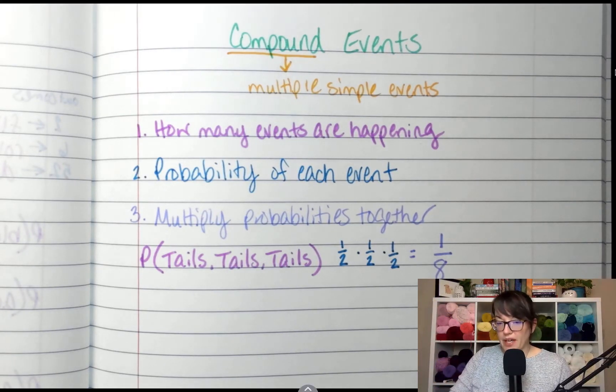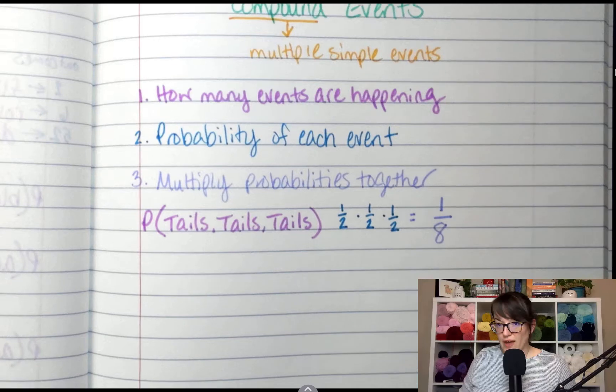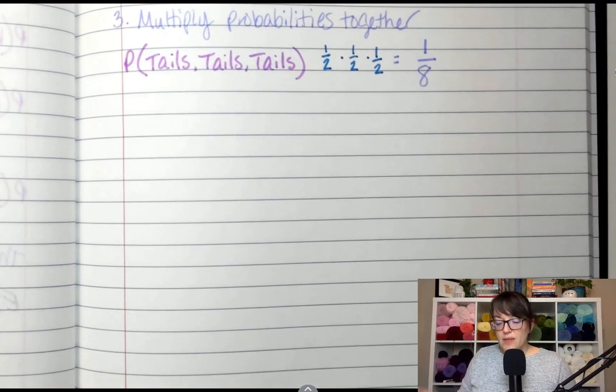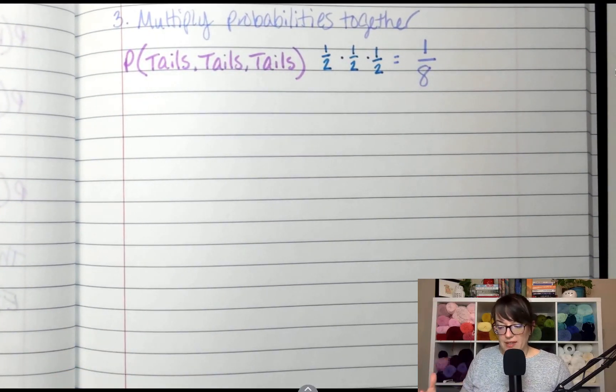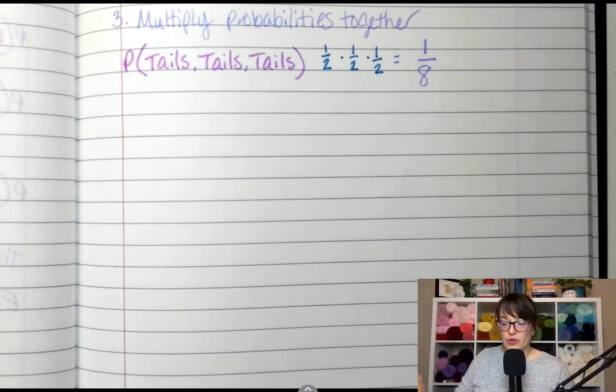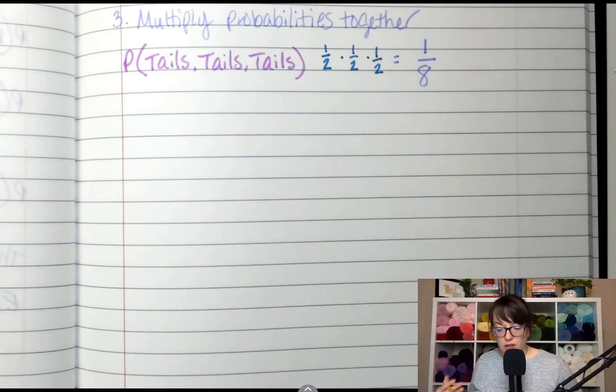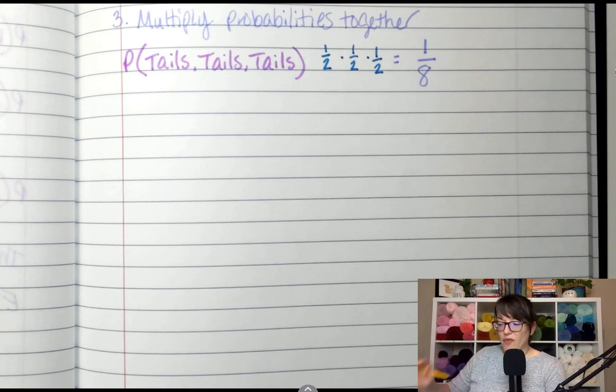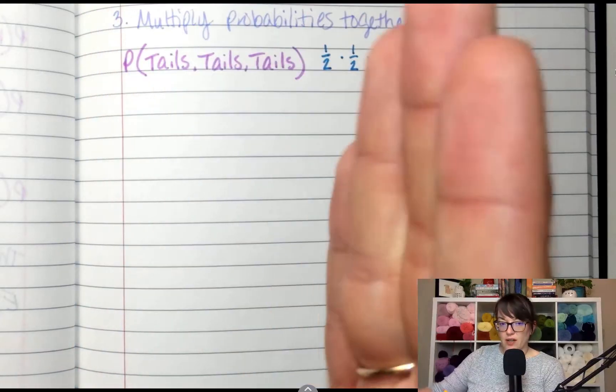Now here is a picture to show that. There is something called a sample space and a tree diagram. I love to make tree diagrams and tree diagrams are a way for us to model what is happening. So I have three events, so I'm going to have three columns.